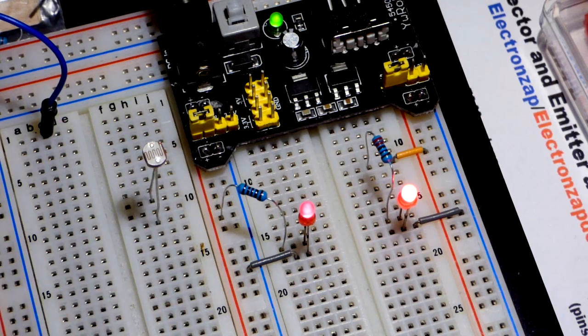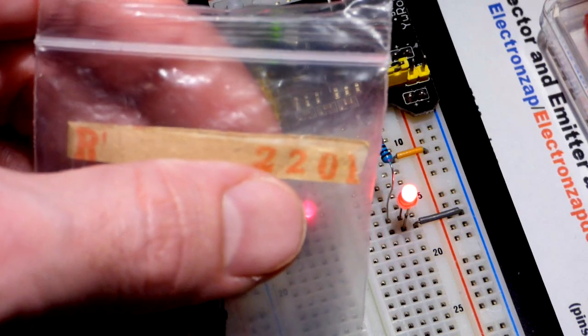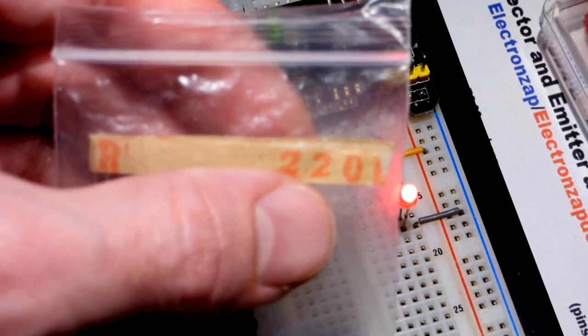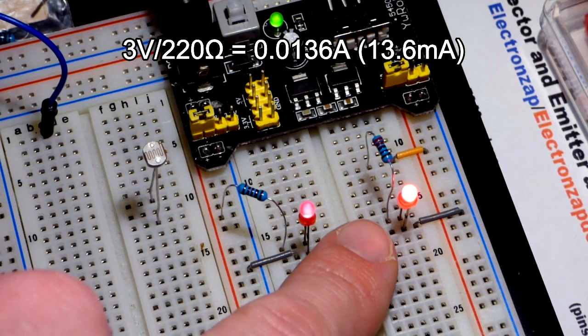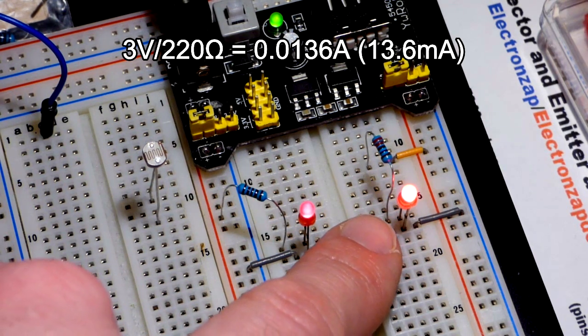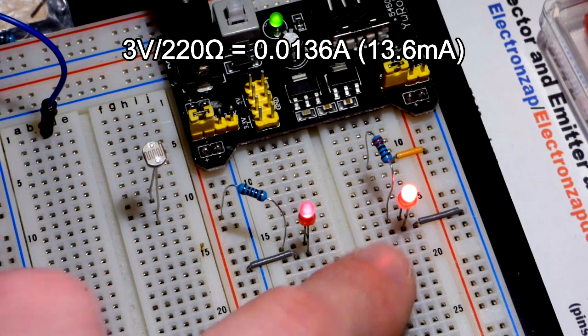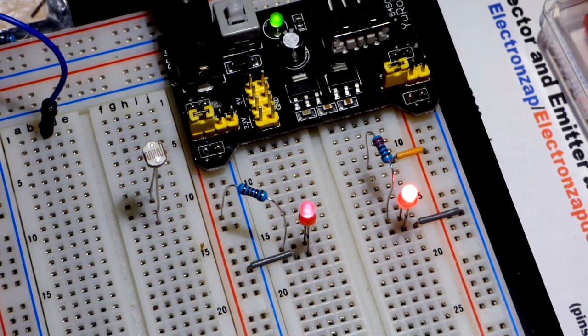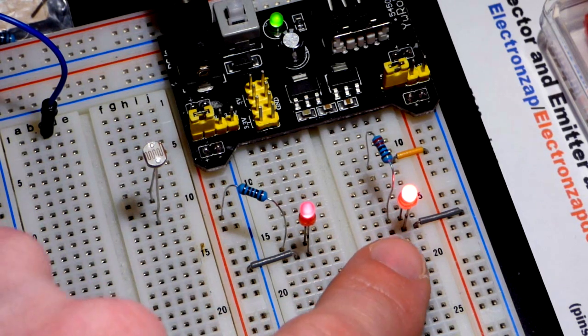Now this is a 220 ohm resistor, so it's about one fourth the resistance. Since it's lower resistance you have more current, about four times the current to be exact. So there's about 12 milliamps of current going through here, and probably just a tiny bit more. But about 12 milliamps. Anyways it's brighter, that's the main takeaway.